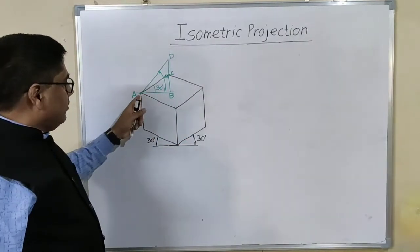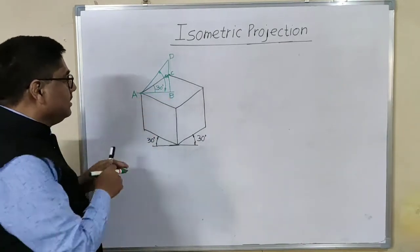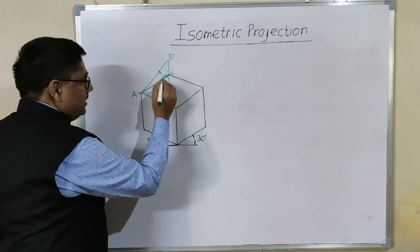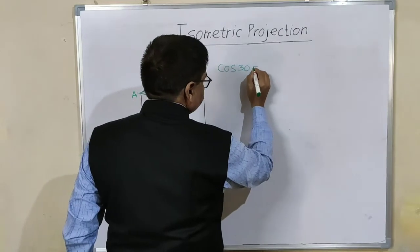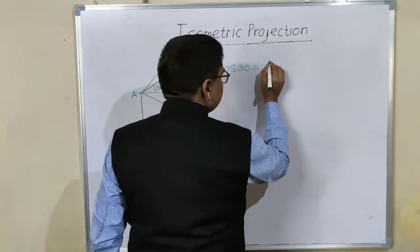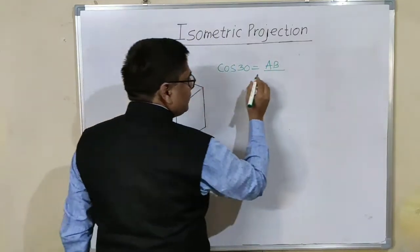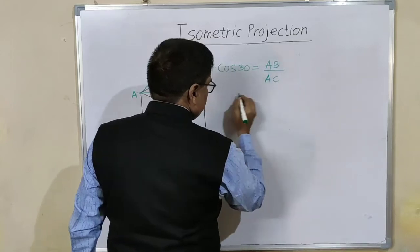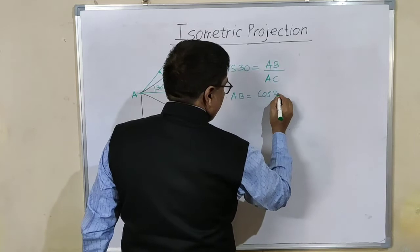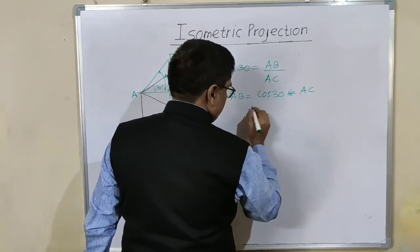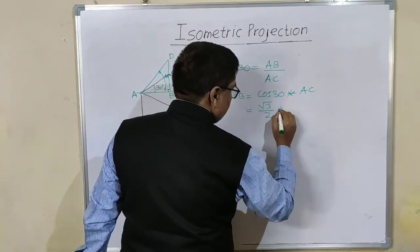If we find cos 30, for this small right angled triangle ABC, cos 30 is equal to adjacent side AB upon this smaller diagonal AC. Therefore, AB is equal to cos 30 into AC, which equals root 3 by 2 into AC.